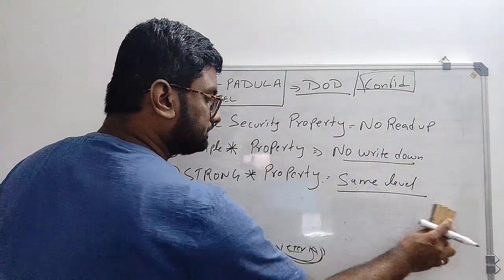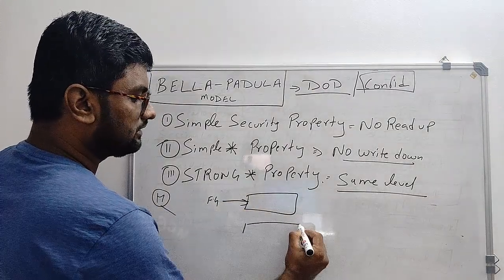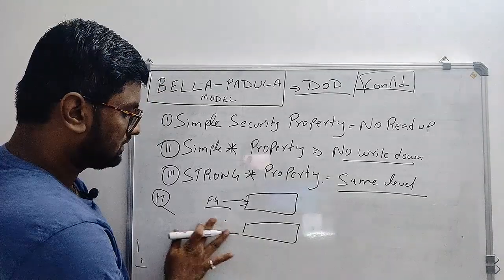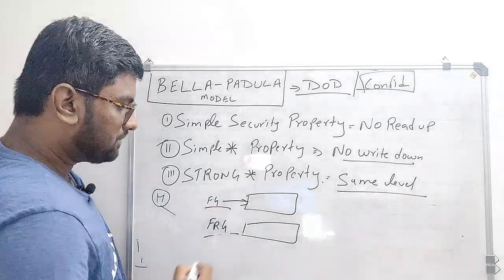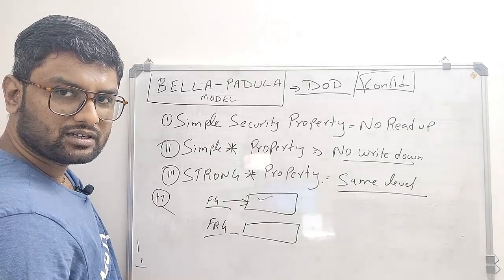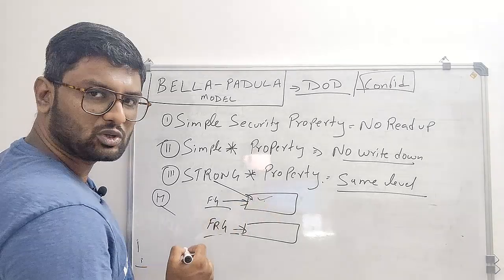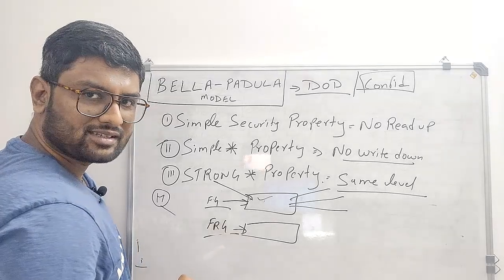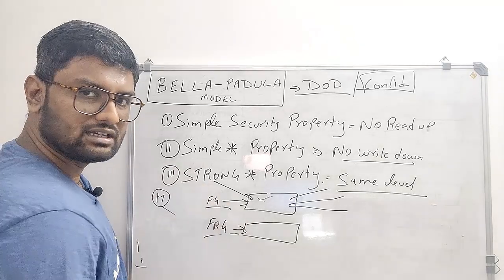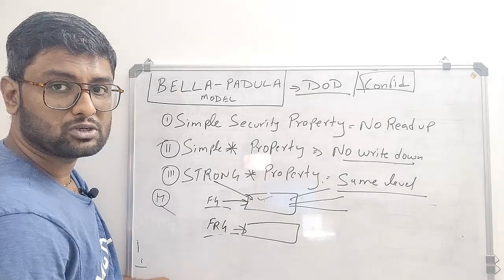A second example is a WhatsApp group. We have a family group and a friends group — both starting with 'F'. You're a well-behaved member of your family group, sending religious messages daily. One day you plan a Goa trip and want to send photos to your friends group, but accidentally share the image to the family group. All people in that group can now access the image. For them, they gained access to someone else's confidential information, and for you, you disclosed data to the wrong label.